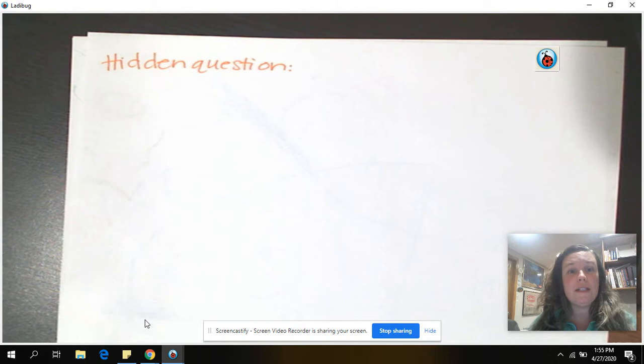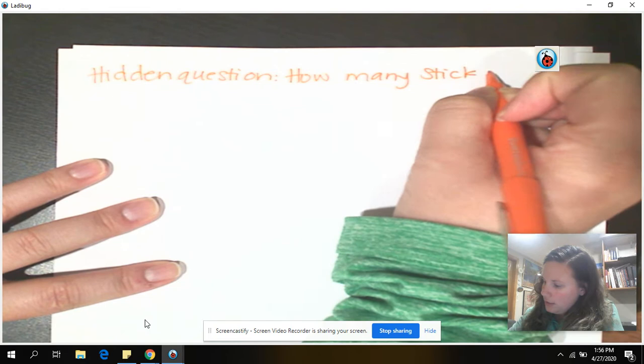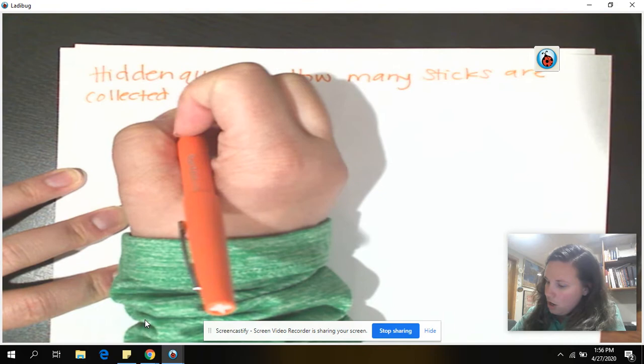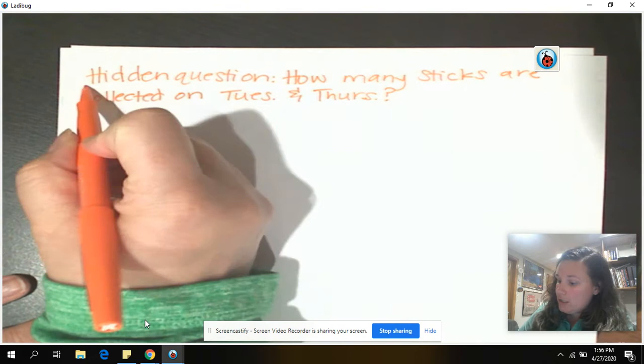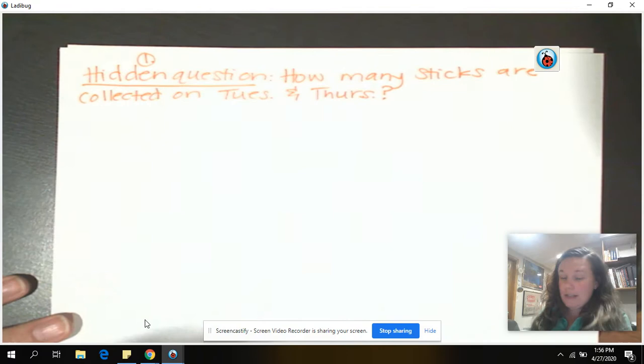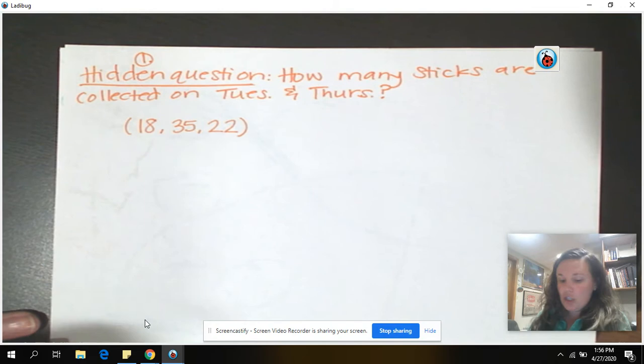We need to know how many sticks she collected in all on Tuesday and Thursday. So, how many sticks are collected on Tuesday and Thursday? So that's our hidden question. We need to do that first before we solve for the question that's being asked. So let's look at our number set here. The number set is actually 18, 35, and 22. We have three numbers. So she's collected 18 sticks on Tuesday, and she got really good on Thursday, and she collected 35 sticks.